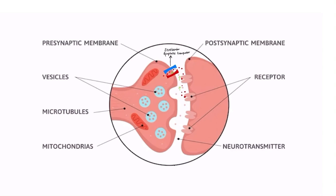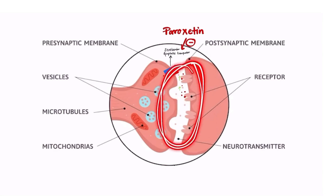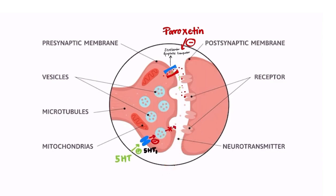There are also serotonin reuptake transporters present on the presynaptic side. Their function is to reuptake the extra serotonin. The main mechanism of action of paroxetine is via this transporter — it blocks this transporter so there is no reuptake of the extra serotonin, and serotonin remains available for a longer duration of time in the synaptic cleft.